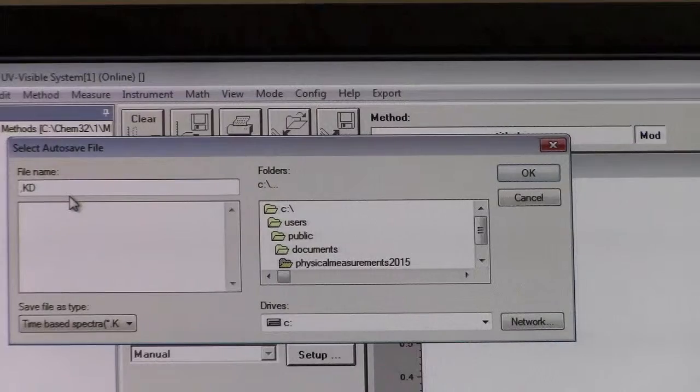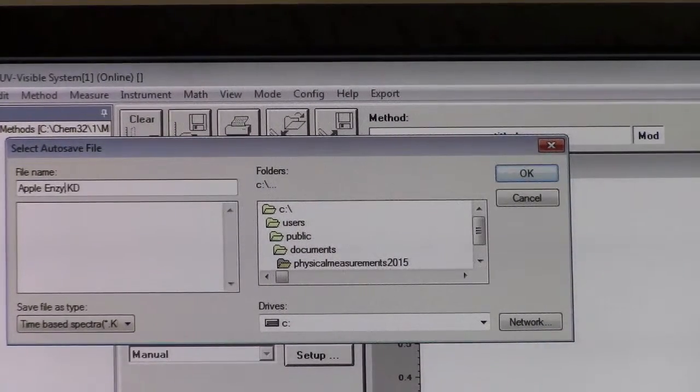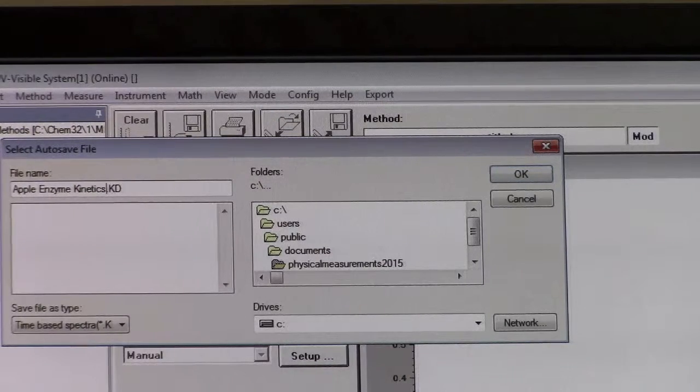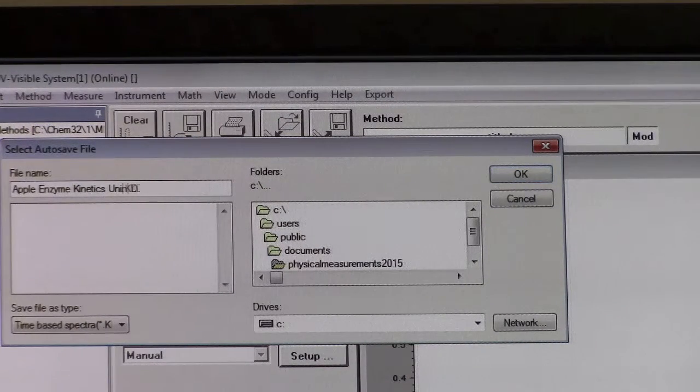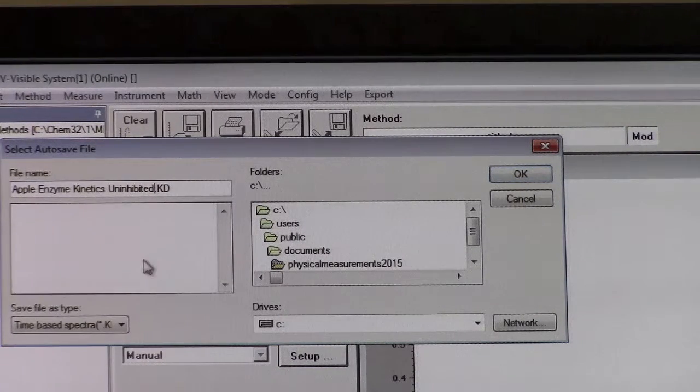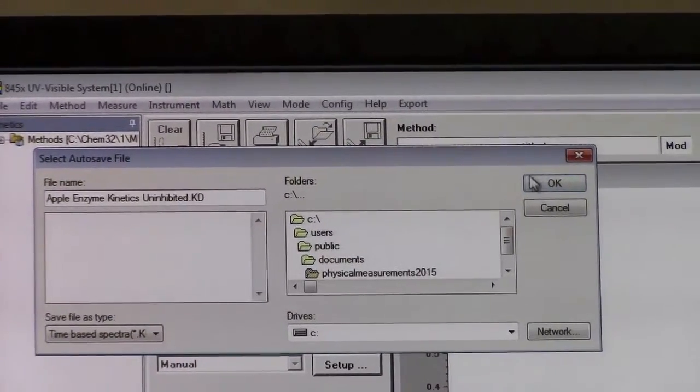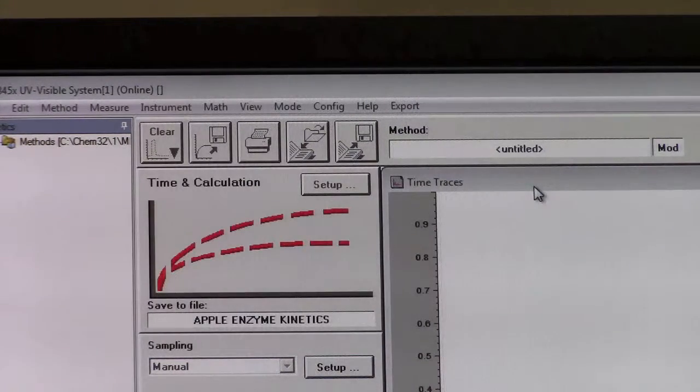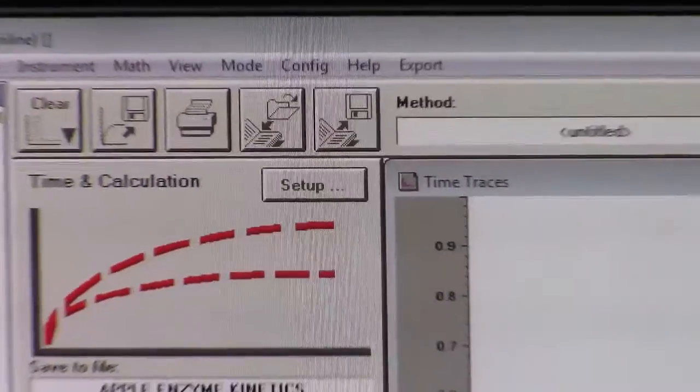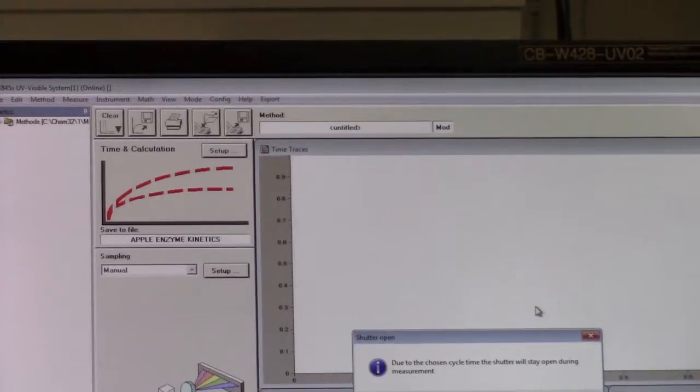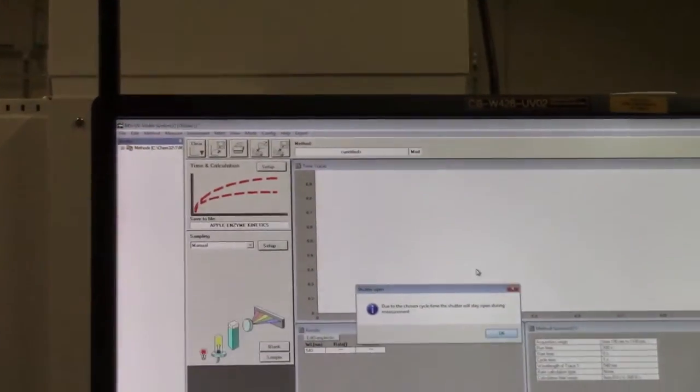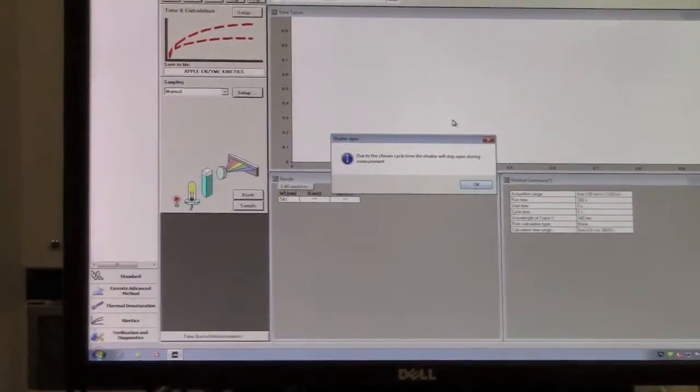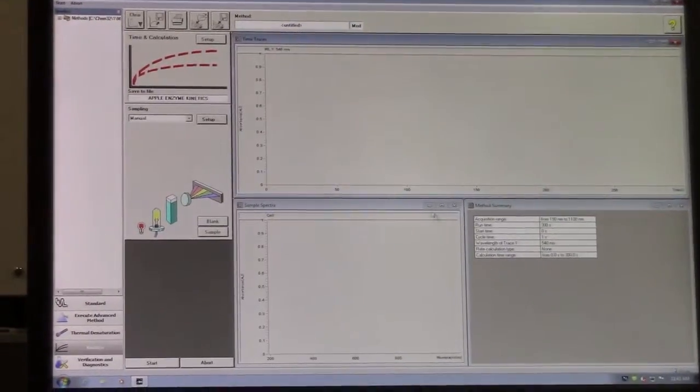For example, Apple Enzyme Kinetics Uninhibited. The file type is a time-based spectra type file, which is appropriate given the method. You'll be prompted that the shutter will remain open during the entire time due to the nature of the measurement and sampling frequency. Click OK to accept.